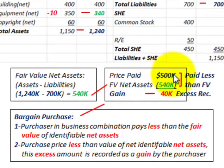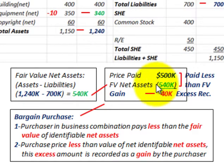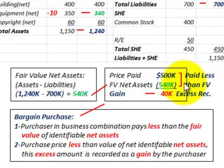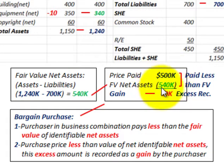To determine our gain: the price that was paid was $500,000, and the fair value of net assets received by Company A was $540,000. So they paid less than the fair value of the assets they received. The difference gives us a gain of $40,000.